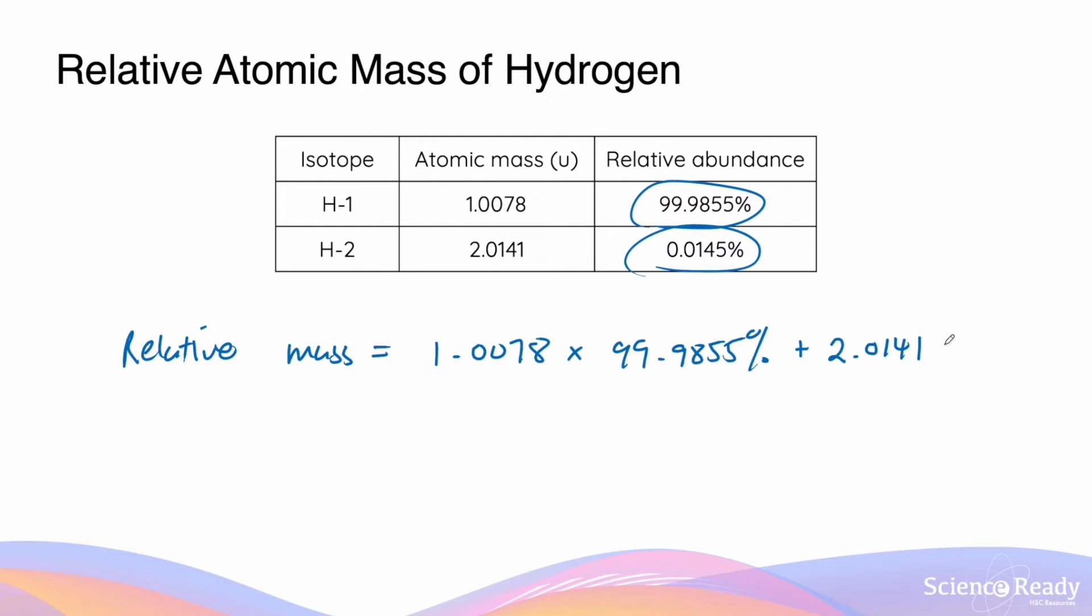Because hydrogen only has two stable isotopes, we only need to do this twice. And this will give an answer of 1.008 atomic mass units. This is the number that's found on the periodic table.